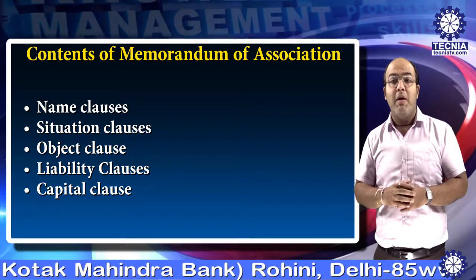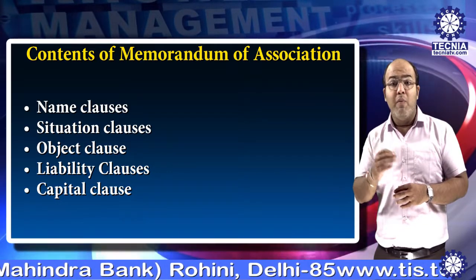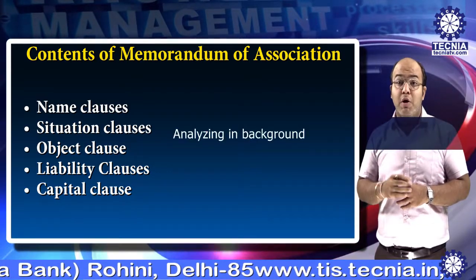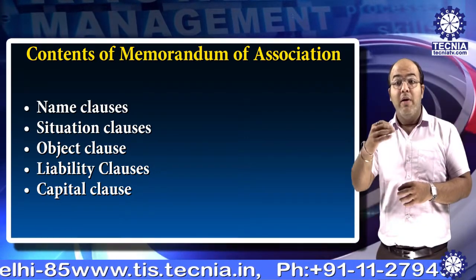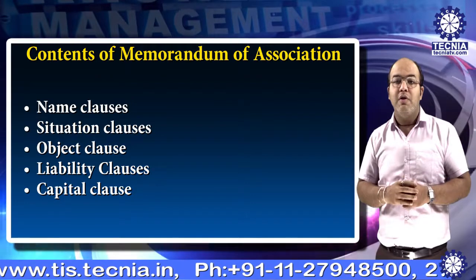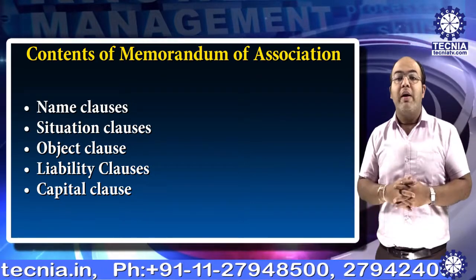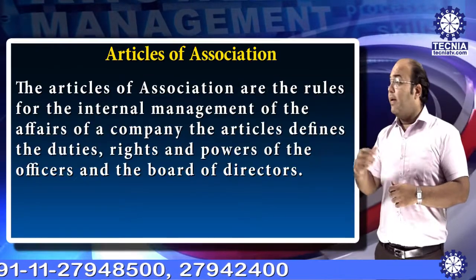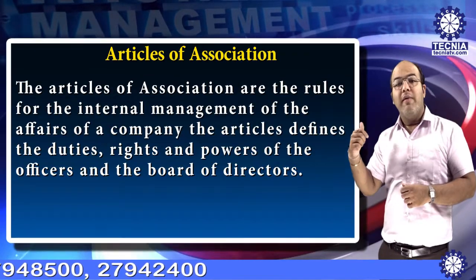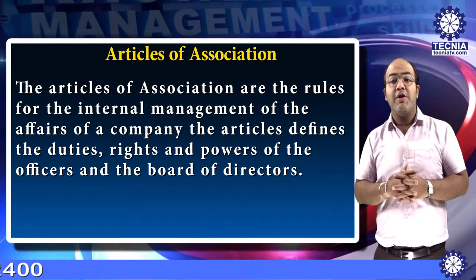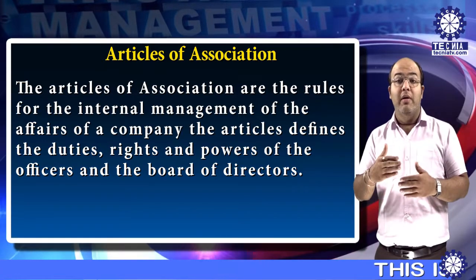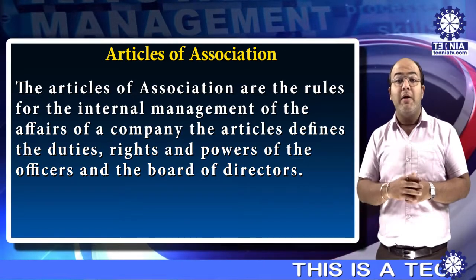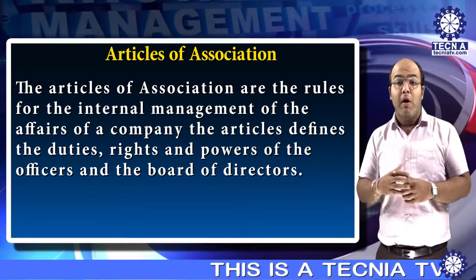The fifth clause is the capital clause. Last but not the least, this clause specifies the maximum capital which the company will be authorized to raise through the issue of shares, called authorized capital. Now we will discuss the article of association.